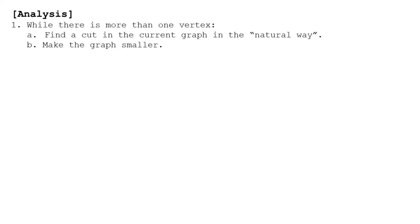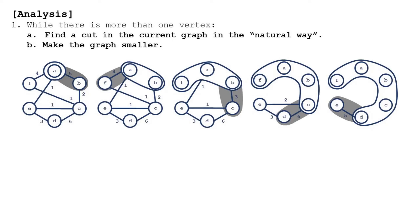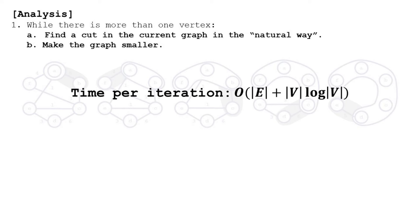Now that we have an idea of how the algorithm works, let's see how efficient it is. The efficiency is a function of the size of the graph — in particular, the number of edges and vertices. The algorithm has several iterations, and in each we must find a vertex whose edge weight to the current vertices in the set is maximized. We can find this vertex quickly if the data is stored in a heap. If you're not familiar with a heap, just think of it as a clever data structure. All told, the time per iteration when using a heap is on the order of the number of edges plus the number of vertices times log of the number of vertices.